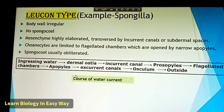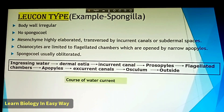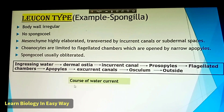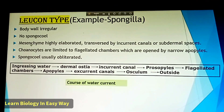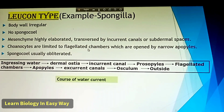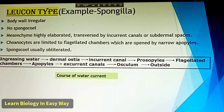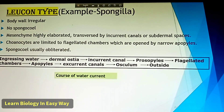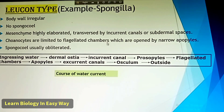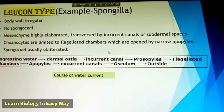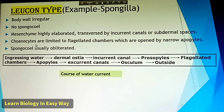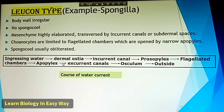Next, Leucon type — example: Spongilla sp. Body wall is irregular, no spongocoel, mesenchyme highly elaborated, traversed by incurrent canals or subdermal spaces. Choanocytes are limited to flagellated chambers which are opened by narrow apopiles. Spongocoel is usually obliterated.